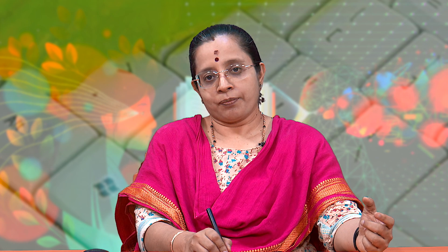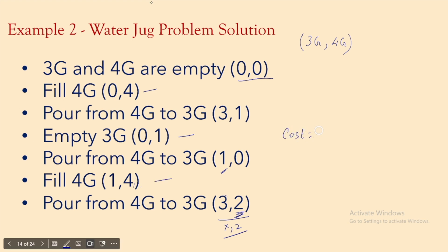This example of the water jug problem illustrates how we represent problems as states, define what actions are, and identify the starting and ending states. The starting point was (0, 0) as the initial state, the ending point is (2, 0) as the final state, and the actions are fill and empty, with cost assumed to be 1.